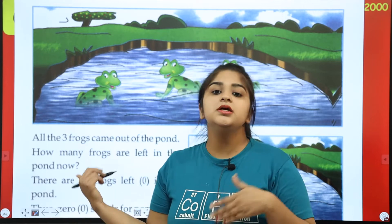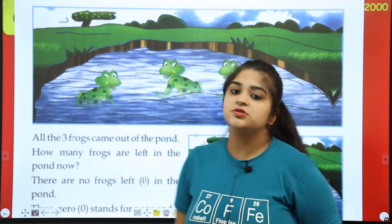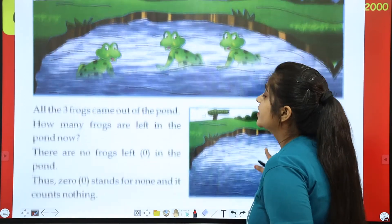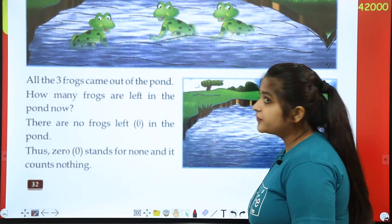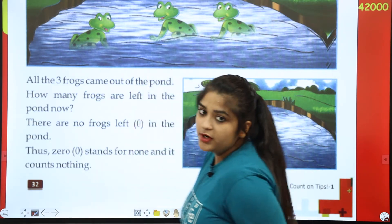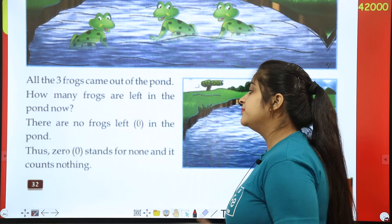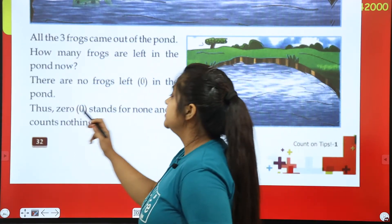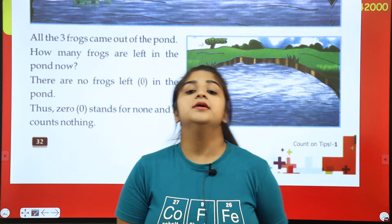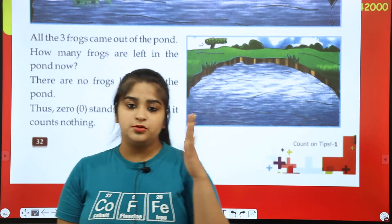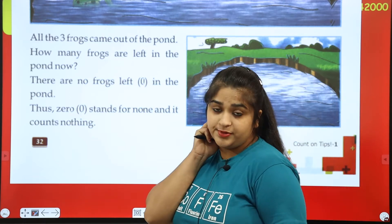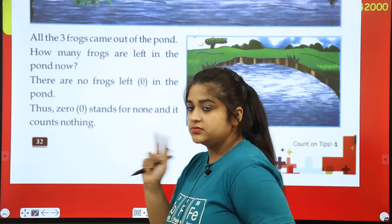There were three frogs in a pond. Three frogs came out of the pond. So what did it save? Nothing — there are no frogs left. Now there are no frogs in a pond, and it counts for nothing. This means that when there are no frogs in a pond, it means zero.